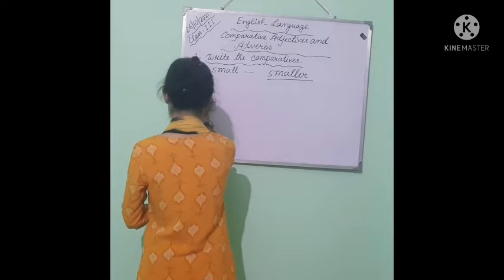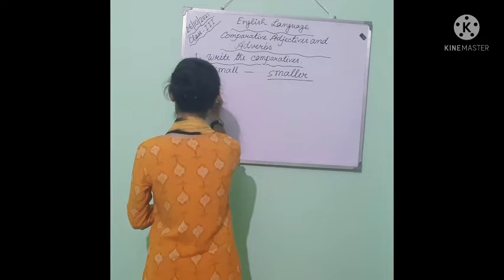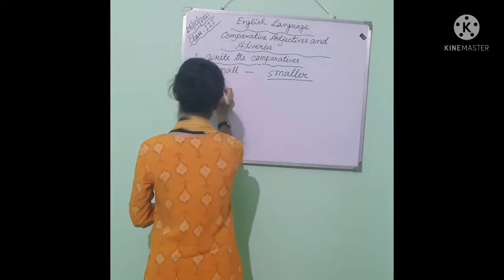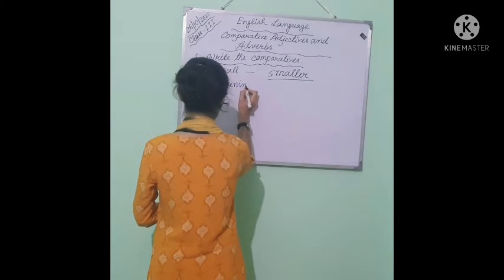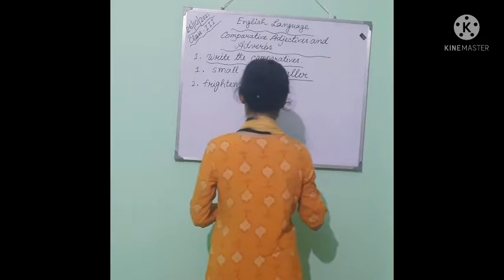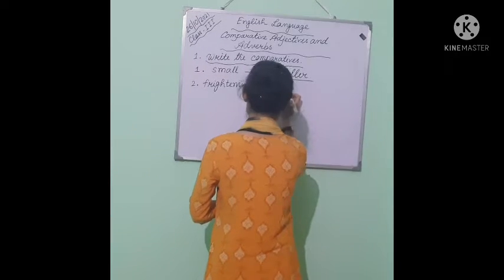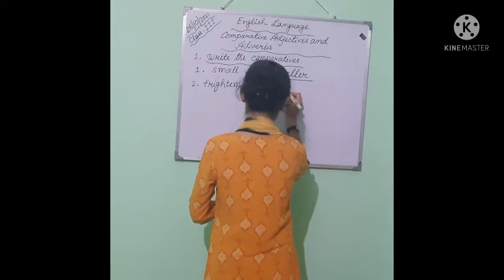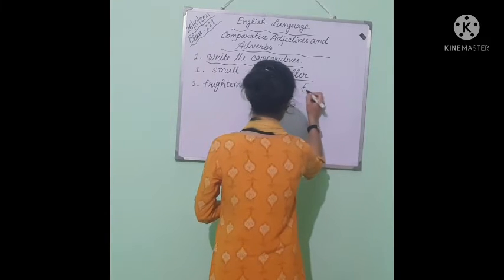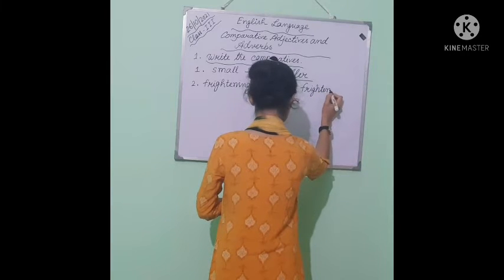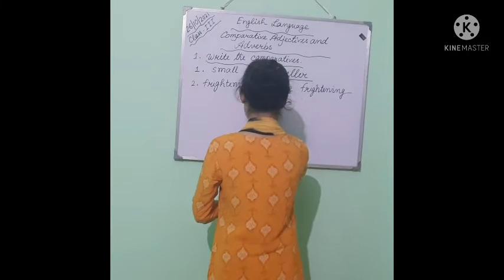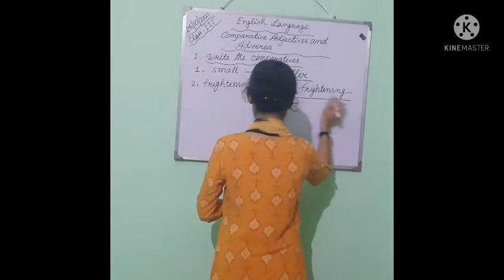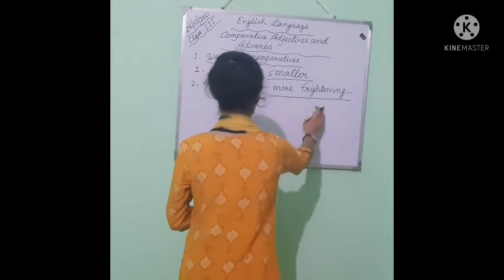Number two: the word is frightening. Frightening is a long word, so the comparative degree is 'more frightening'. More frightening. This is the comparative degree of frightening.